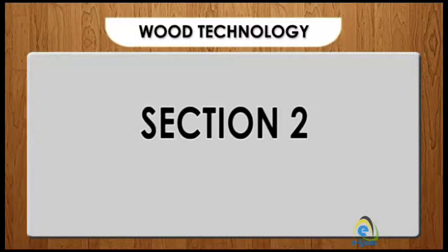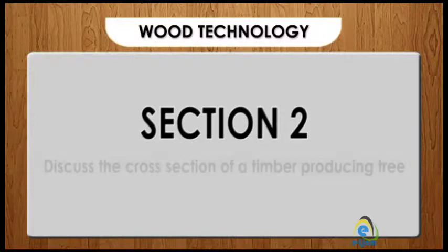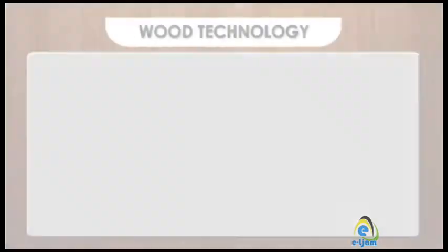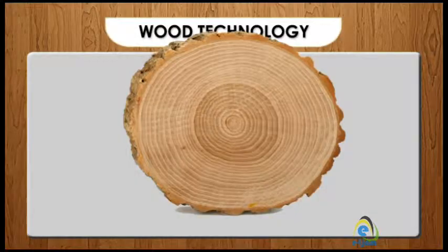Section 2. At the end of the section you should be able to discuss the cross-section of a timber producing tree. Now let's look at the cross-section of the trunk and its makeup to see how it grows.